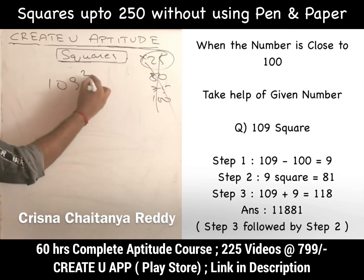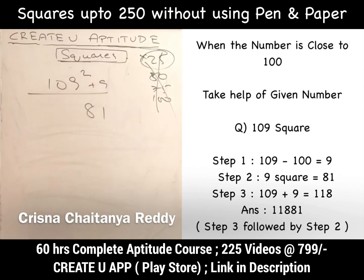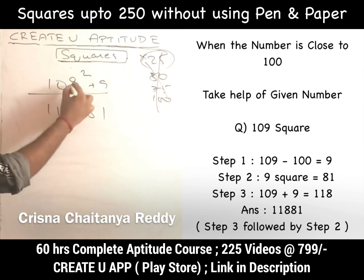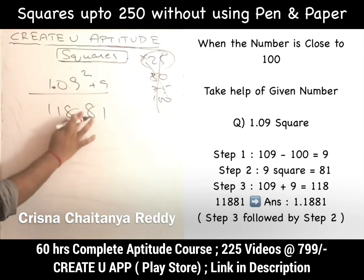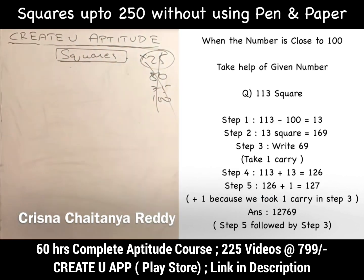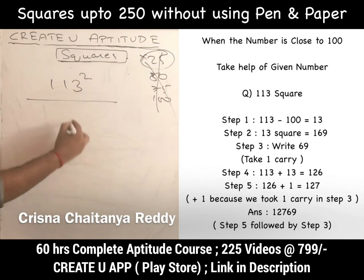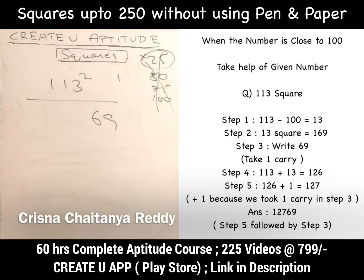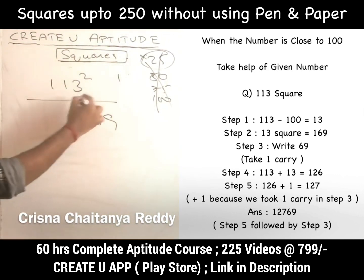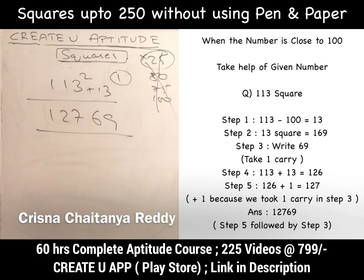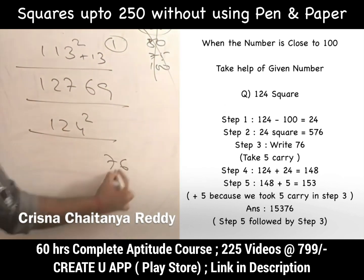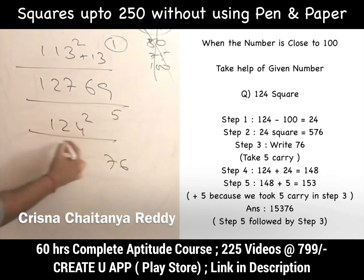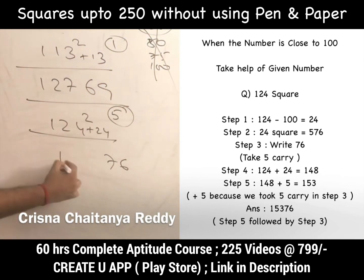For 109²: it is 9 more than 100. 9² = 81. Since more than 100, add to the given number: 109 + 9 = 118. Answer is 11881. For 113²: 13² = 169; write 69 with carry 1. 113 + 13 = 126, plus 1 = 127. Answer is 12769. For 124²: 24² = 576; write 76 with carry 5. 124 + 24 = 148, plus 5 = 153. Answer is 15376.